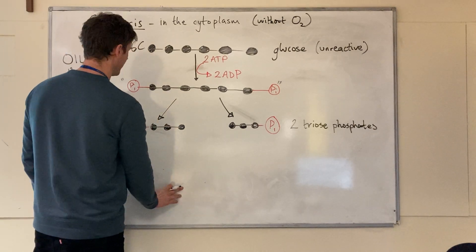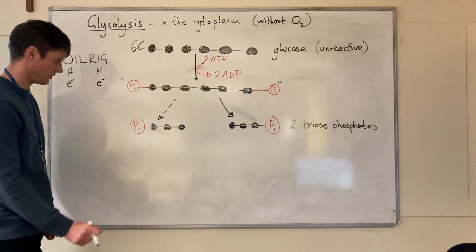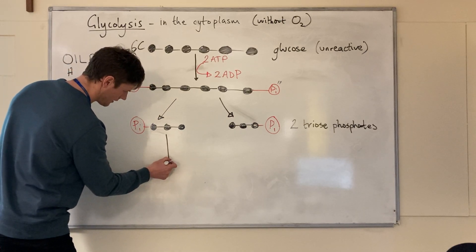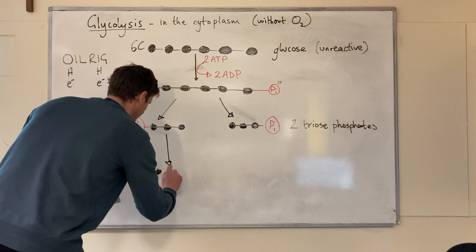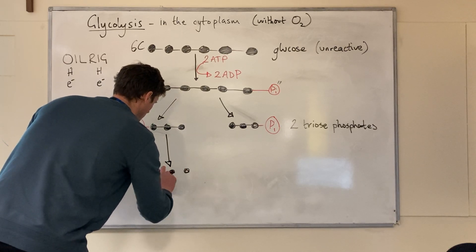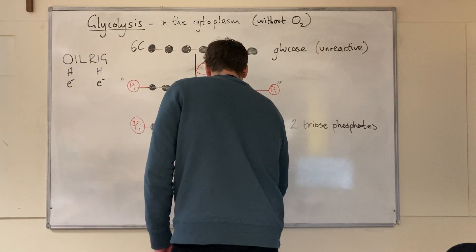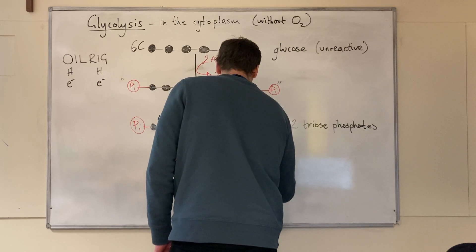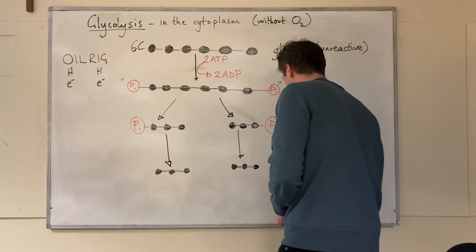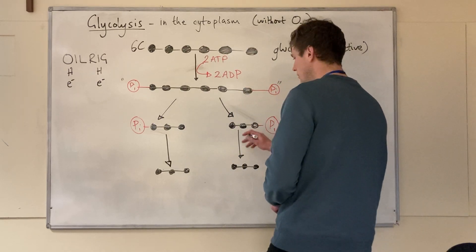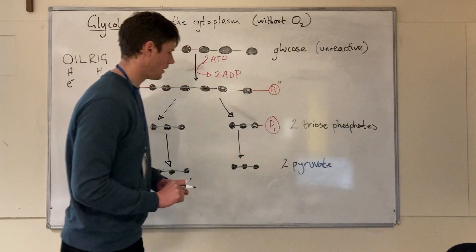Triose phosphate is oxidised, which means it must lose hydrogen and electrons. It is oxidised into a second three-carbon molecule called pyruvate. Each triose phosphate is oxidised into pyruvate, so two pyruvate molecules are produced.